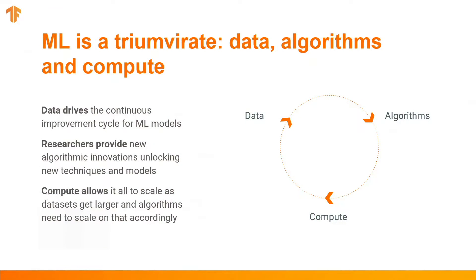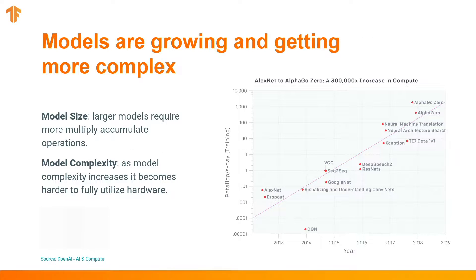We are here because artificial intelligence is experiencing a tremendous growth. All three components — algorithms, data, and compute — have come together to change the world. Compute is really important because that's what enables machine learning researchers to build better algorithms and new models. And as you can see, the models are becoming much, much more complex. To train a model today, we need several orders of magnitude more compute than we needed several years ago.